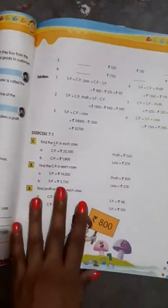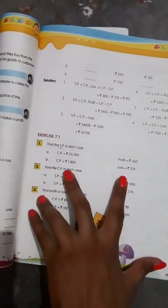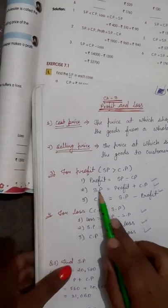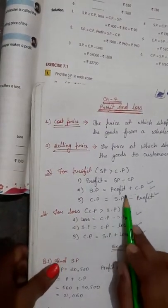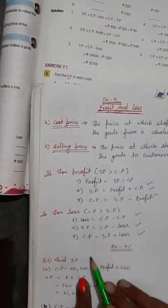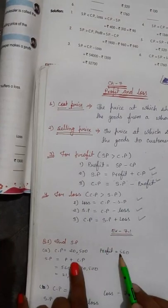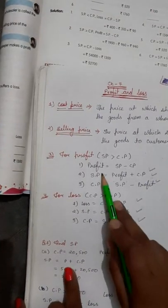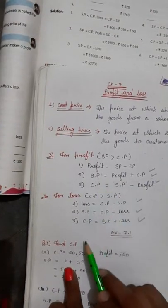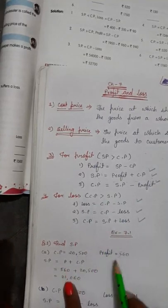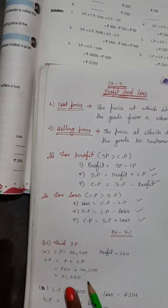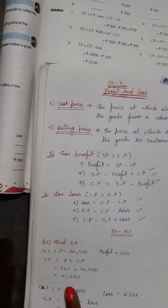First question: Find SP. Here two things are given — CP and profit. So what is the formula for finding SP based on profit? The formula is SP = Profit plus CP. We use this formula, substitute the values, and after adding these two numbers you will get the selling price: 21,016.